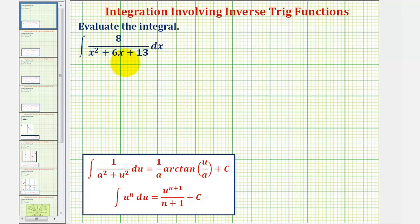It might be tempting to try a u substitution here by letting the denominator be equal to u, but notice how if we try this, differential u, which is equal to u prime times dx, would be two x plus six times dx. And notice how we don't have a linear factor in the numerator, so basic u substitution won't work.